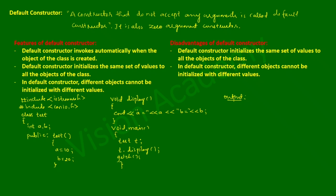Now let us check out how exactly this program works. Execution always begins from the main function. As soon as the object t of type test is created, control immediately transfers to the constructor test(), and data members a and b are initialized with values 10 and 20 respectively. After that, control transfers back to the main function, and t.display() is called, which prints a equal to 10 and b equal to 20.